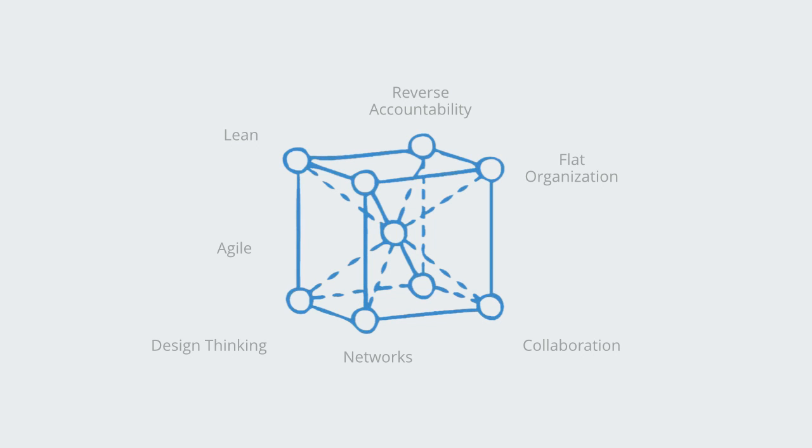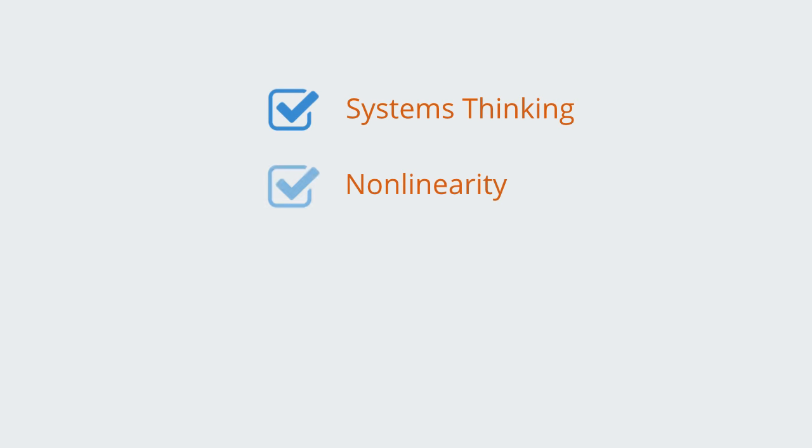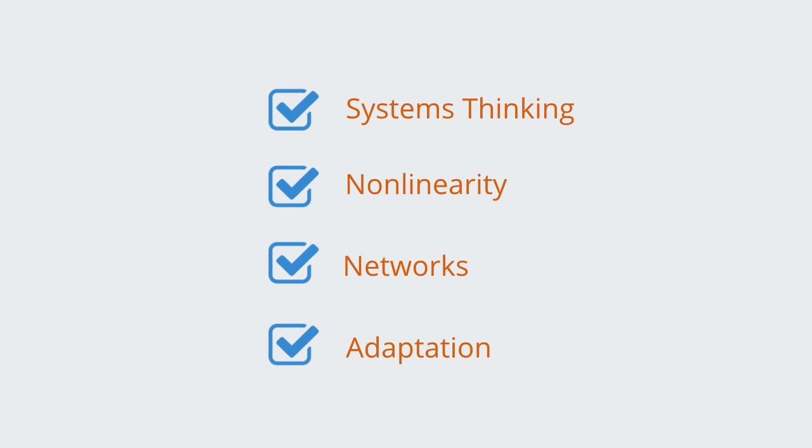And we'll use the rest of this video to outline what that framework is. That is to say, the key concepts within complexity theory and how they apply to management. Although complexity theory consists of a whole zoo of new ideas, we'll structure it around a few central concepts, namely systems thinking, non-linearity, networks, and adaptation and evolution.